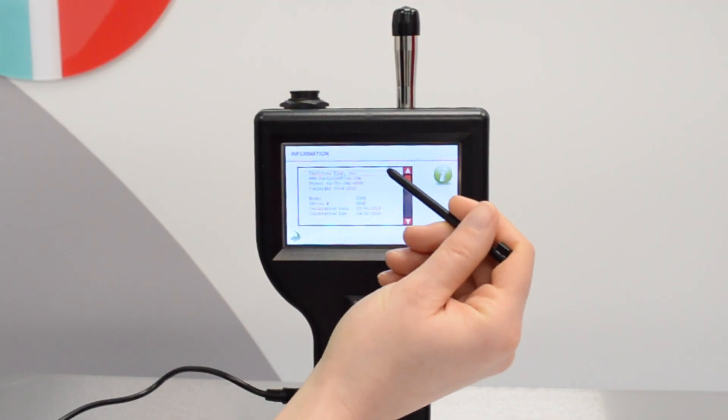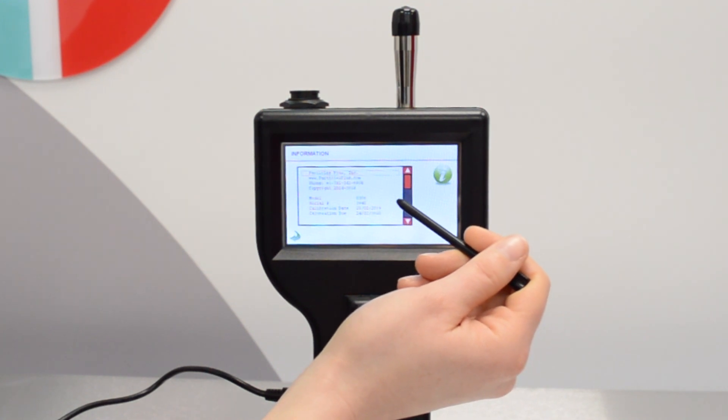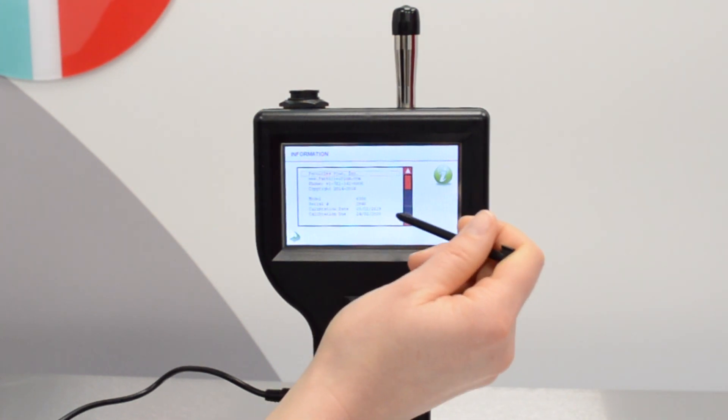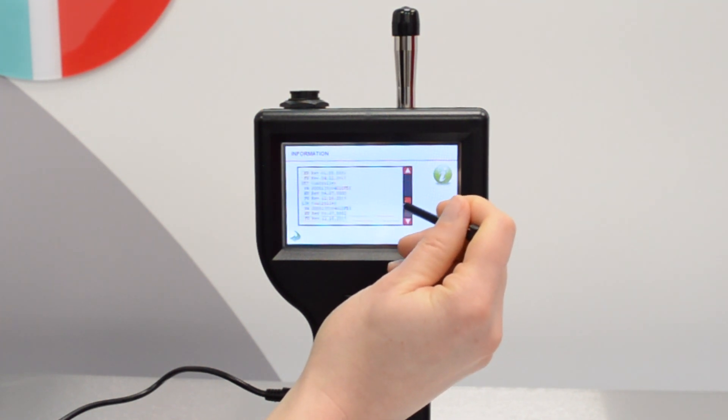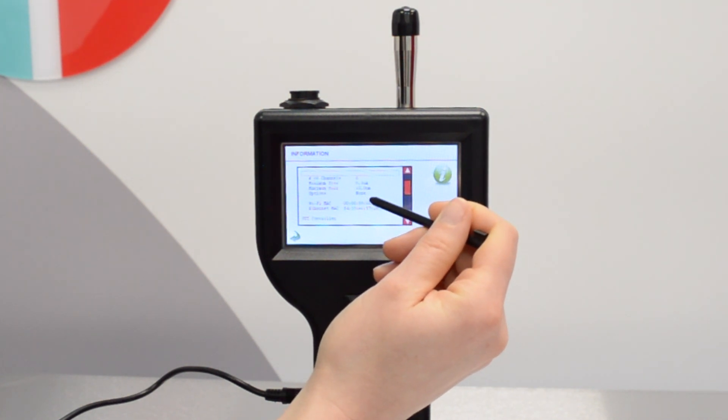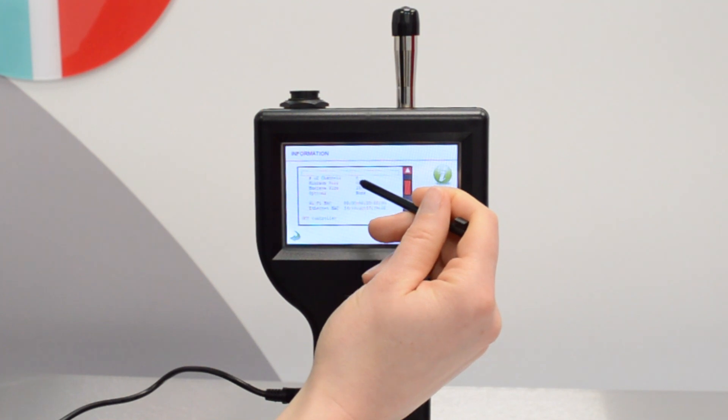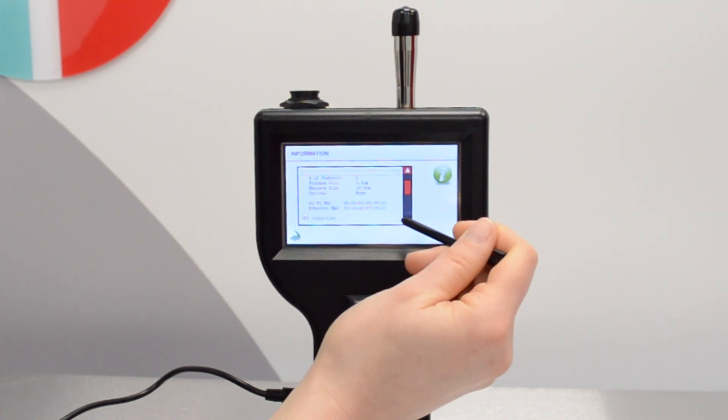Tapping on the Particles Plus logo takes you through to an information screen that gives you information on the manufacturer, the model number, the serial number, the calibration date and the calibration due date. It also gives the number of channels from the particle counter. This one is a six channel and some more information on the software.